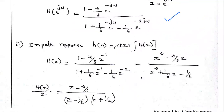The next thing is to calculate the impulse response h(n). The impulse response h(n) is nothing but the inverse Z-transform of the system function H(z), or the inverse DTFT of H(e^jω). Either way we can calculate — we will get the same answer. Comparing the two methods, the Z-transform method is easier because the variable z is simpler.